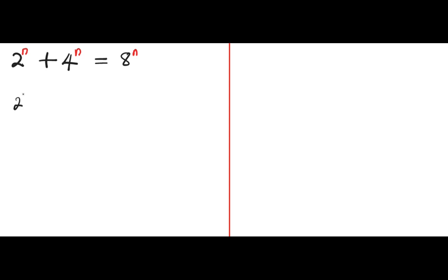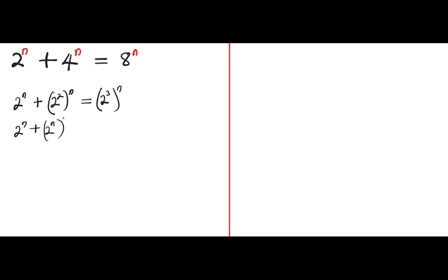So we have 2 to the power of n plus 4 to the power of n. We can rewrite 4 to the power of n as 2 to the power of 2, all to the power of n. And 8 to the power of n can be rewritten as 2 to the power of 3, all to the power of n. So this equation becomes 2 to the power of n plus 2 to the power of 2n equals to 2 to the power of 3n.